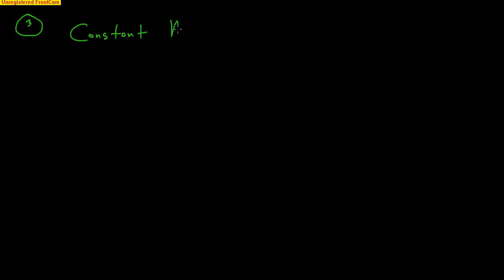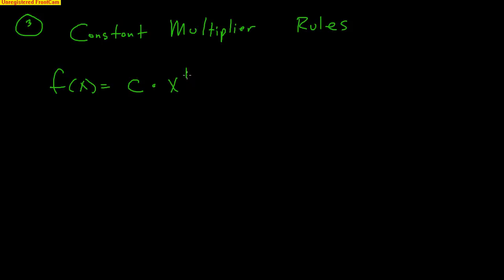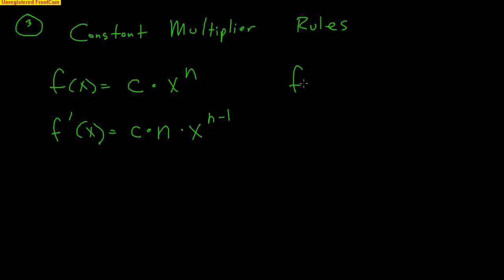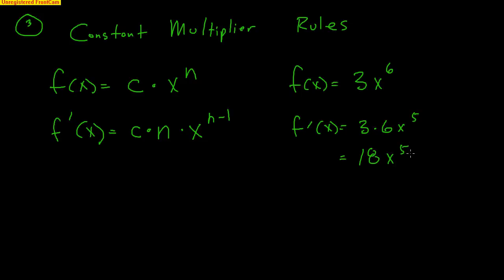The third rule is called the constant multiplier rule. If you have a constant times x to the n, you use the power rule but that constant just stays there. When the exponent n falls down in front, you multiply it by the constant. For example, if I have 3x to the 6th, the derivative is 3 times 6x to the 5th. 6 falls down, 6 minus 1 is 5, so the derivative is 18x to the 5th.